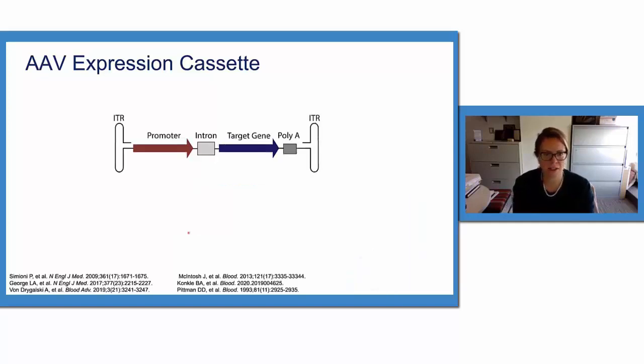Looking a little bit more specifically into the components of the expression cassette, the transgene used is predominantly for nearly all hemophilia B trials at this point is now Factor IX PADWA.